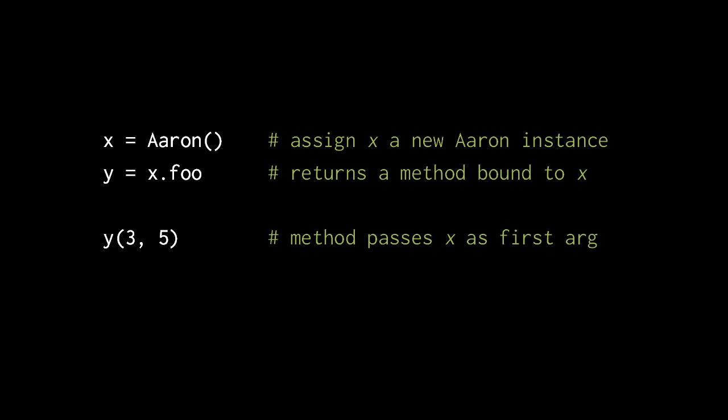When a method object is invoked, it invokes its function and passes on any of the arguments that were supplied, but it inserts the instance as the first argument.